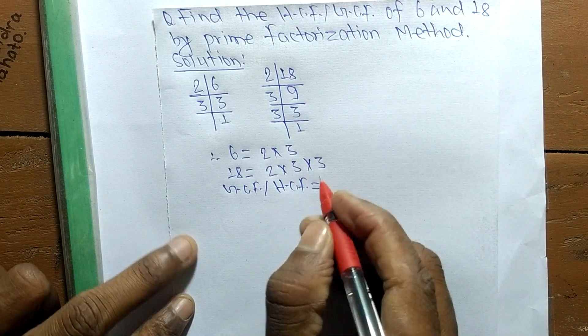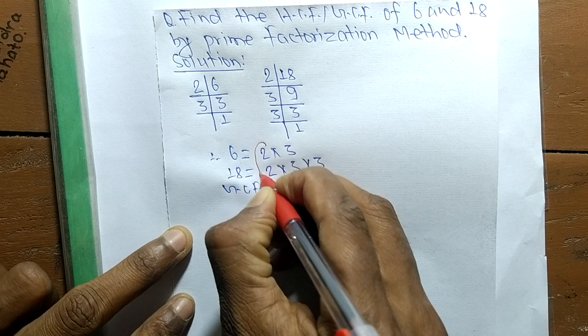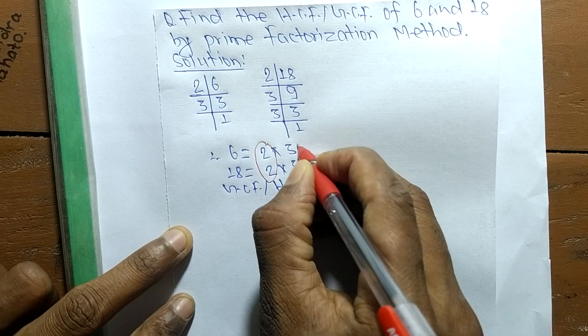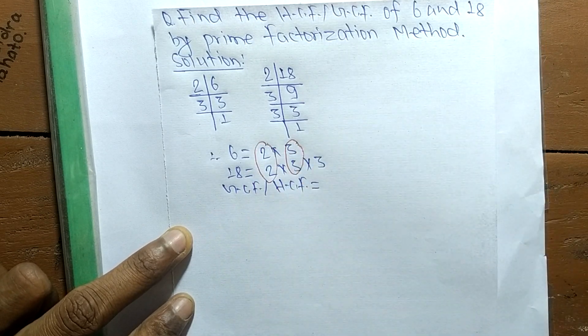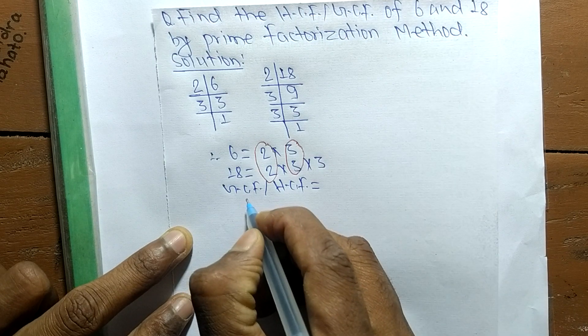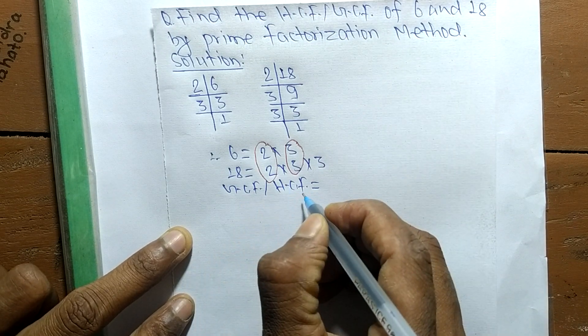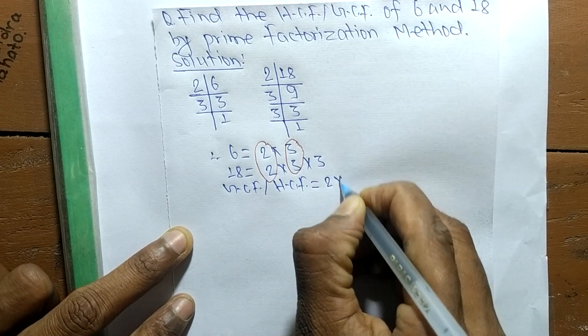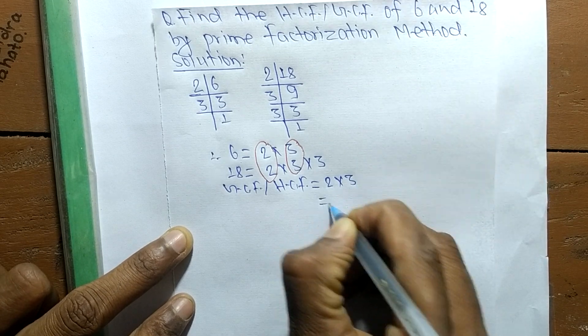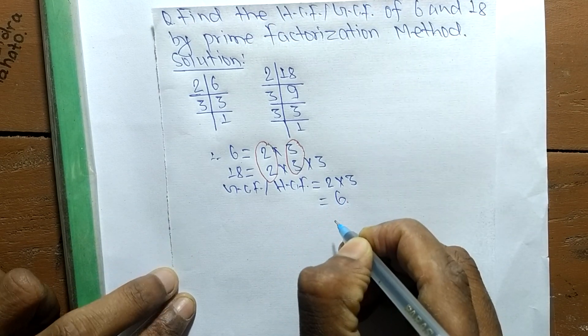The first common factor here is 2, and the second one is 3. So the GCD or HCF is equal to 2 times 3, which is equal to 6.